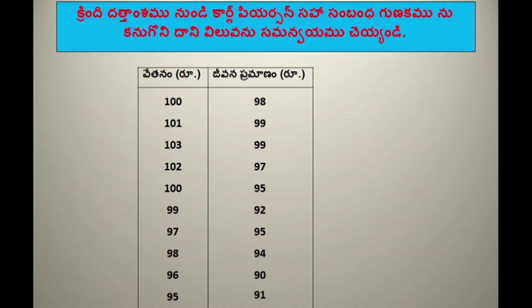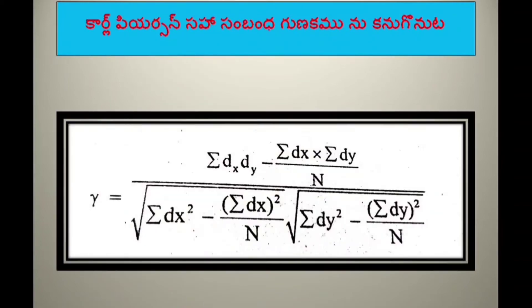The formula is: sigma dx·dy minus (sigma dx × sigma dy) divided by n, all divided by the square root of [sigma dx² minus (sigma dx)² by n] times the square root of [sigma dy² minus (sigma dy)² by n].